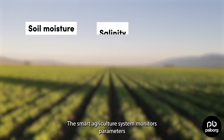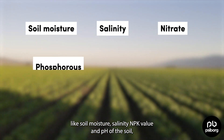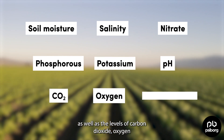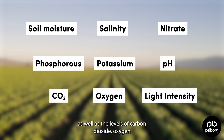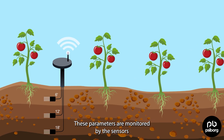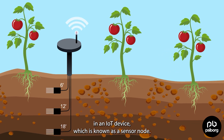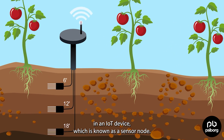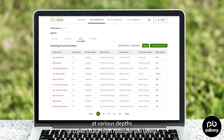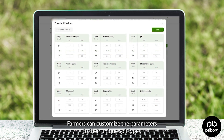The smart agriculture system monitors parameters like soil moisture, salinity, NPK value and pH of the soil, as well as the levels of carbon dioxide, oxygen, and light intensity above the soil. These parameters are monitored by sensors equipped in an IoT device known as a sensor node. The sensors are positioned at various depths to collect data from multiple soil layers. Farmers can customize the parameters to their unique soil types and crop needs by setting specific thresholds for each parameter.